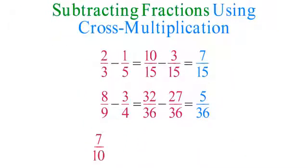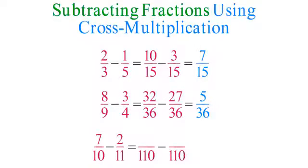As a final example, subtract 7 tenths minus 2 elevenths using a common denominator of 10 times 11 equals 110. Next, cross-multiply: 7 times 11 equals 77, and 2 times 10 equals 20, so 7 tenths minus 2 elevenths equals 57 over 110.